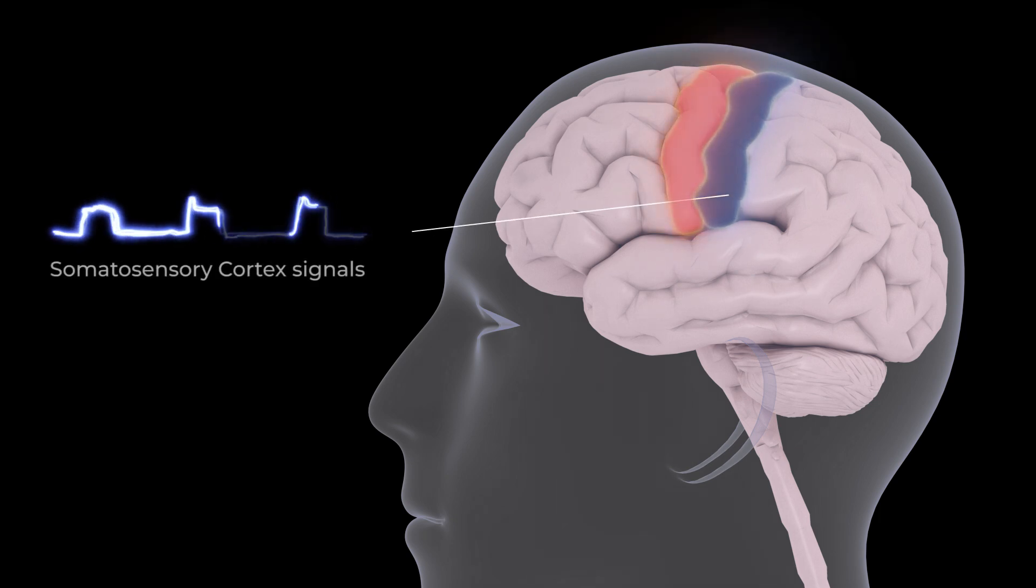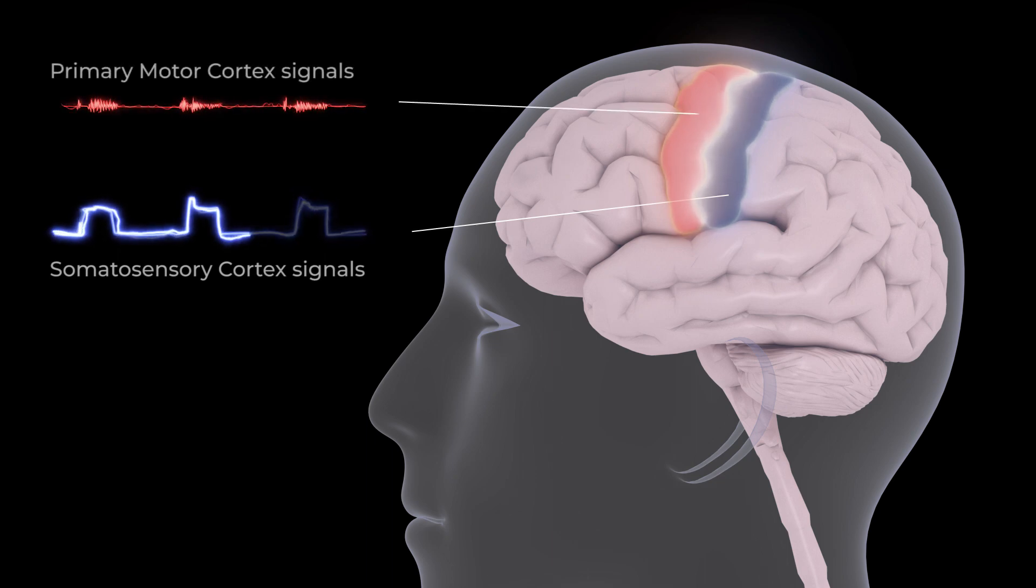Signals from the somatosensory cortex induce noise in the overlapping regions of the primary motor cortex. By sheer proximity, noise in the primary motor cortex are interpreted as a slight movement in absence of real movement.